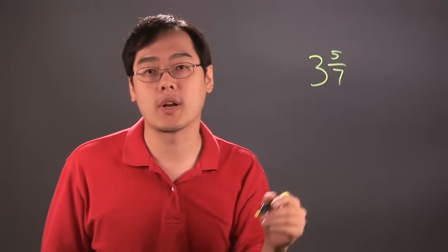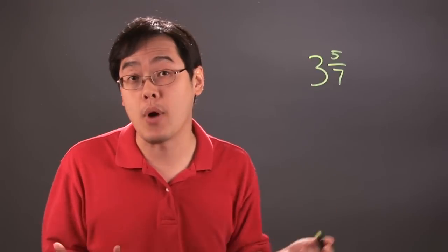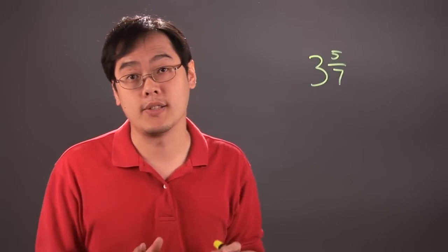Now suppose you have 3 and 5 sevenths and you want to convert that to a fraction, an improper fraction to be more specific. Now here's the process.